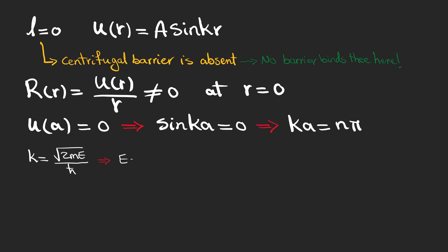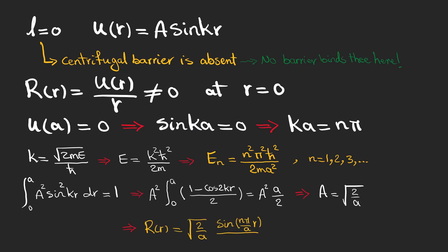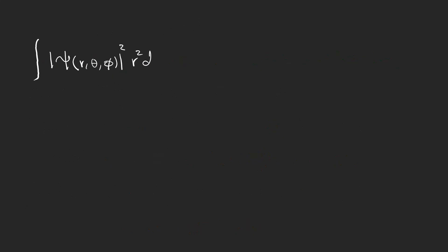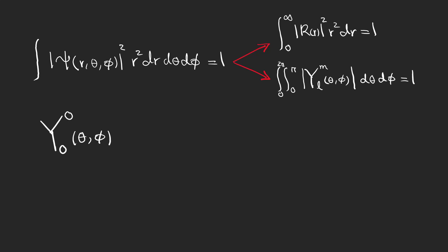And finally, these are our possible energies that our particle can have based on the probability which is given by this normalized wave function. Pay attention that for the normalization condition and spherical coordinate, these two integrals should be met. So based on the previous video, we know the normalized angular wave function to be this for L equals 0. And today we calculated the radial wave function for L equals 0.